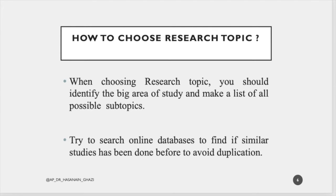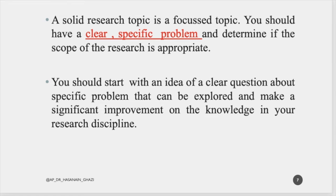So how do we choose a research topic? We should identify the big area of study, then make a list of all possible subtopics. Search online databases and Google Scholar to find if similar studies have been done before, because if a study was done among the same population in the same location it is a waste of time and resources to duplicate it. However, if a study was done in the US and you want to repeat it in Iraq, that is acceptable because it is a different location and population.